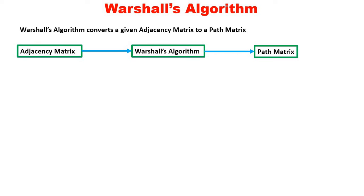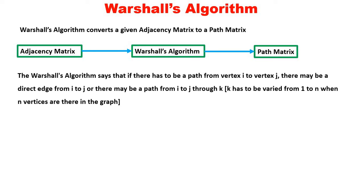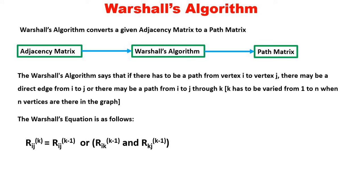k should be varied for all the vertices in the graph. If n vertices are there in the graph, then k should take a value from 1 to n. There is a Warshall's equation: if there has to be a path from i to j, either there is already a path from i to j, or there should be a path from i to k and also there should be a path from k to j — meaning i to j via k.